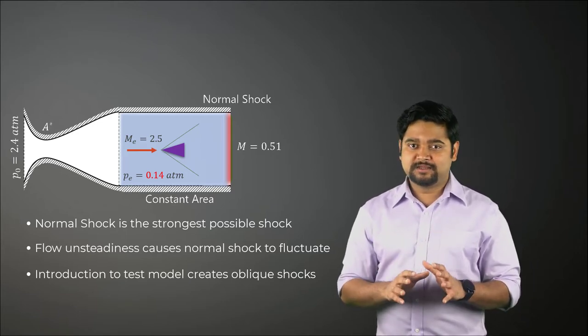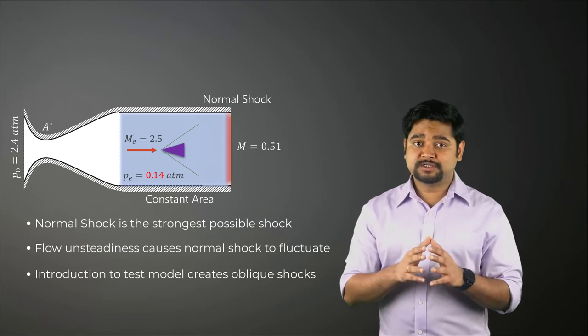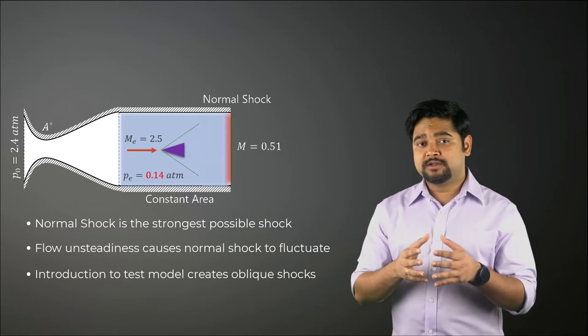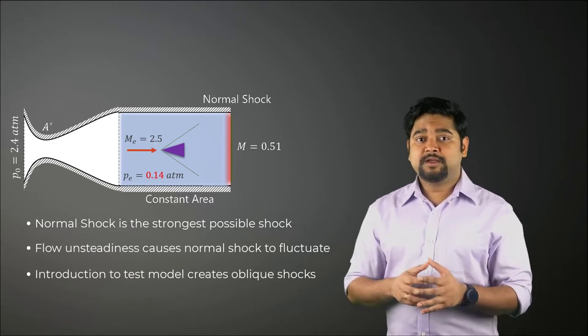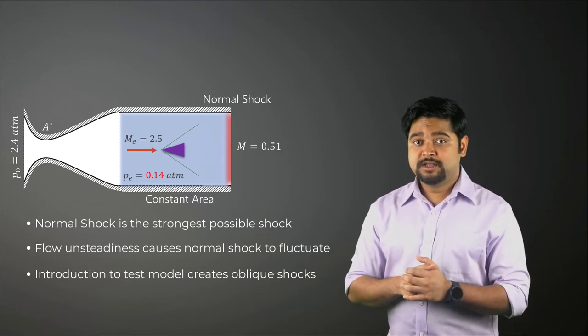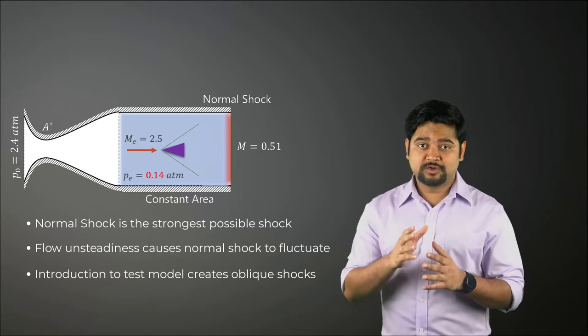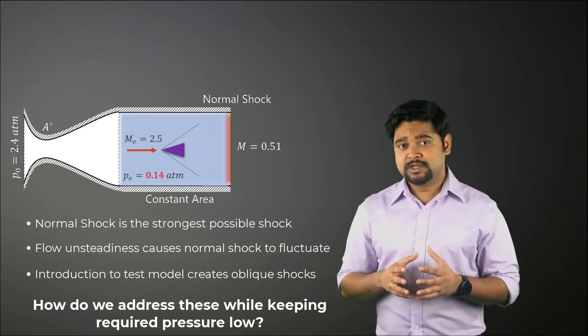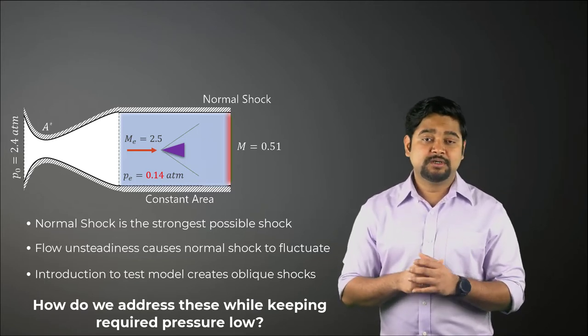And lastly, just the introduction of test model in the test section would cause oblique shock waves from the model to propagate downstream making the flow three-dimensional and causing the normal shock to vanish. So how do we address these concerns while keeping the reservoir pressure low?